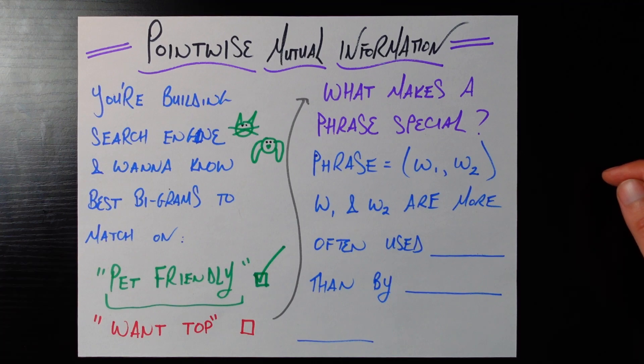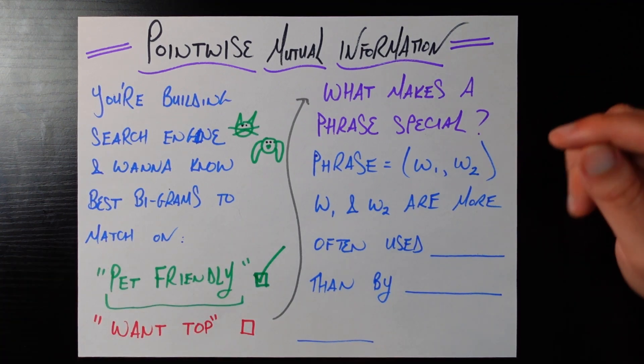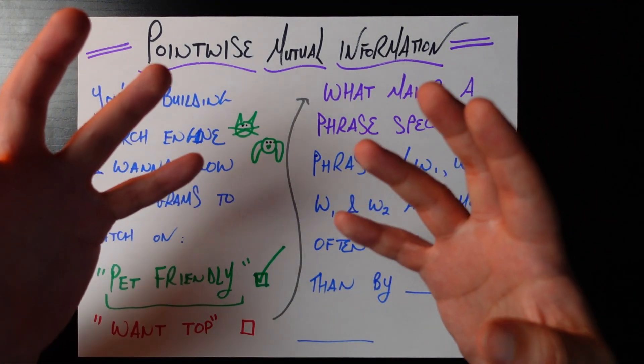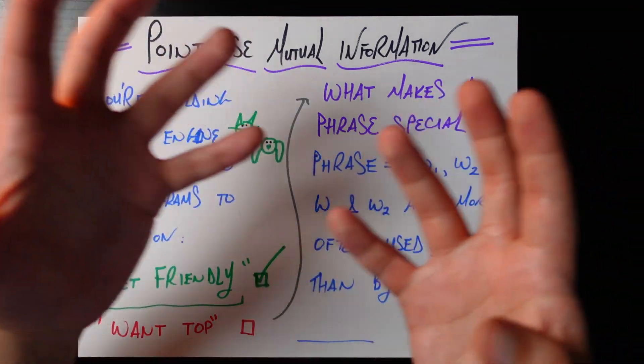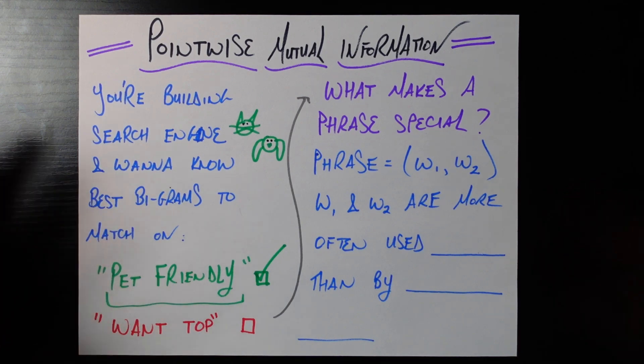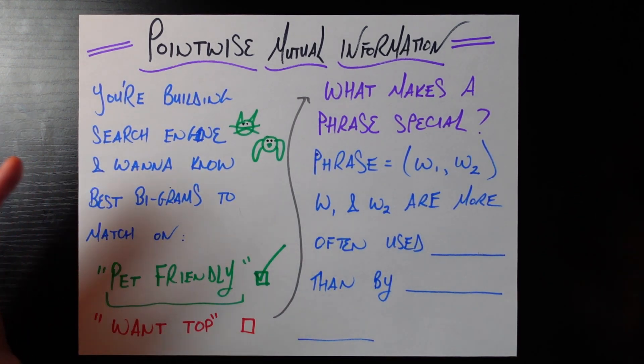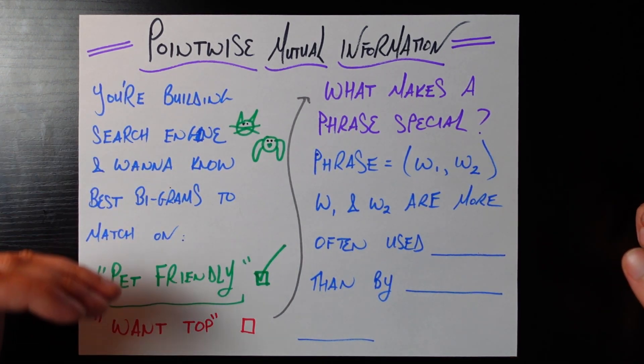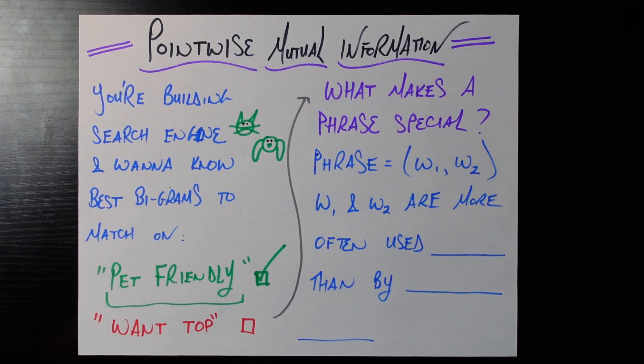And so we want to only index the bigrams which are going to give us the most use which are actually phrases which are things that people might actually search and logically belong together. So the question is how do we figure out which bigrams we're going to index? For example here's two bigrams that we could index. How do we feel about each one?